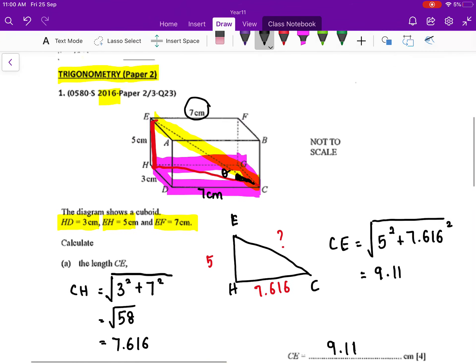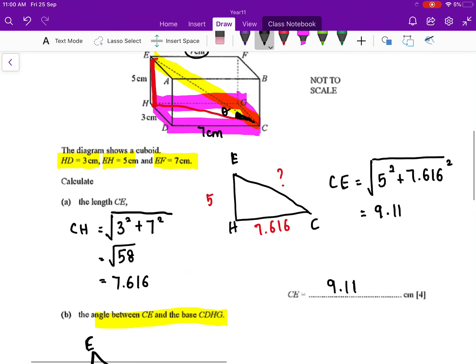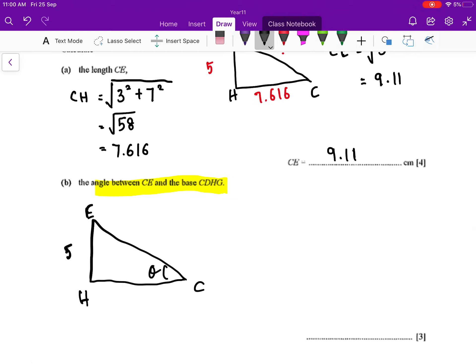Okay, so we have already know that the length of EH is 5, and we have also know that your CH you have calculated just now, which is 7.616. But I'm going to use √58 since I have to get an accurate answer.